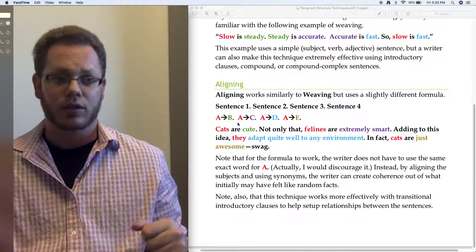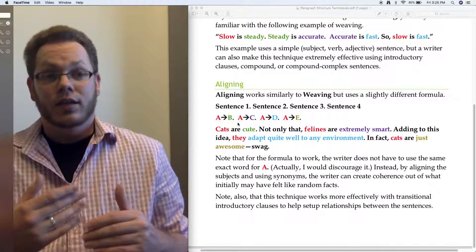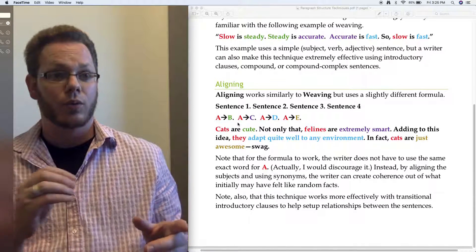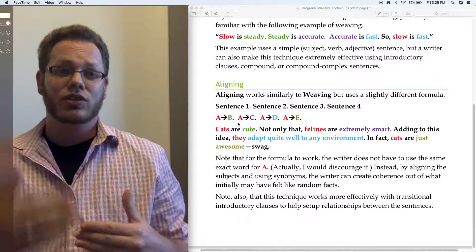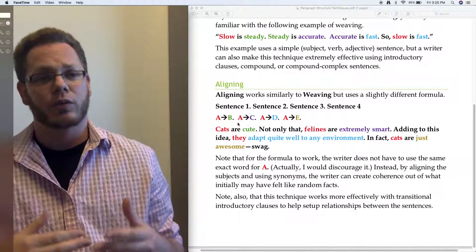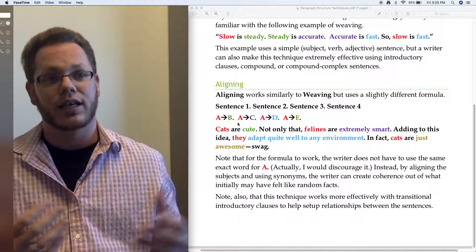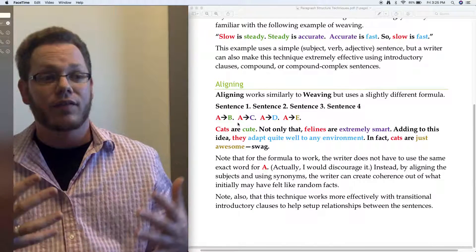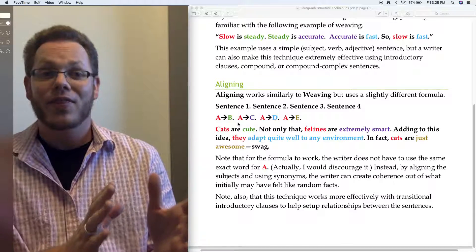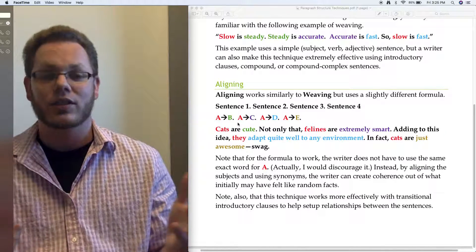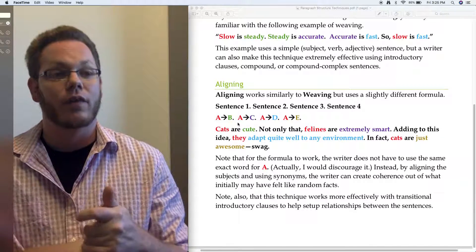If we look at the example here, we still have the little color coded formula so you can kind of follow it. In this case, all the red words are supposed to be the main topic of that paragraph and each sentence is supposed to add just a little bit more. We've got cats are cute. Not only that, felines are extremely smart. Adding to this idea, they adapt quite well to any environment. In fact, cats are just awesome. Ignore the last part. It was based on a thing with a class I had like in 2013.